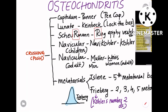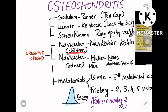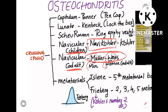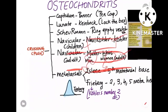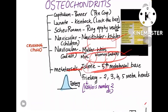Scheuermann's disease — the R is for ring epiphysis of the vertebral bodies, so Scheuermann's disease is ring epiphysis osteochondritis of the vertebrae. For the navicular, pronounce it 'navi-Köhler' — Köhler's disease in children. In adults, navicular osteochondritis is called Müller-Weiss disease: M for men and W for women, both adults.